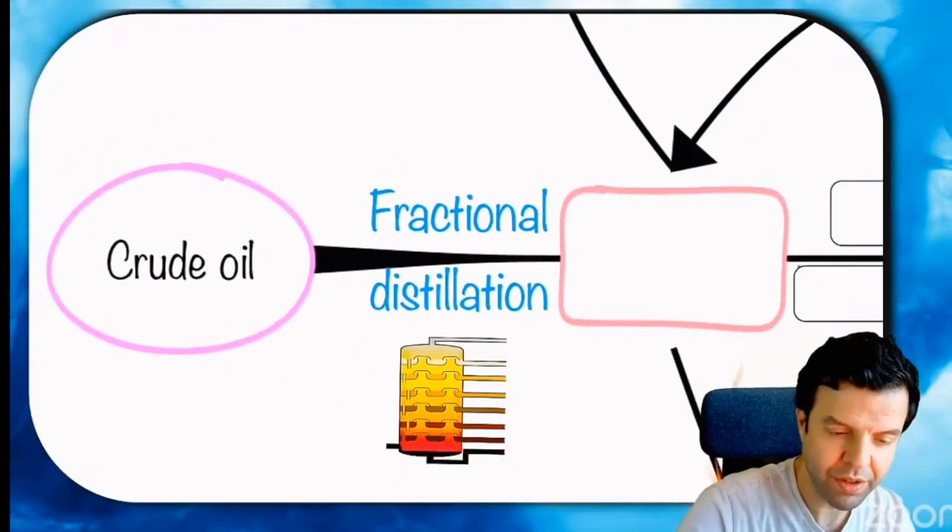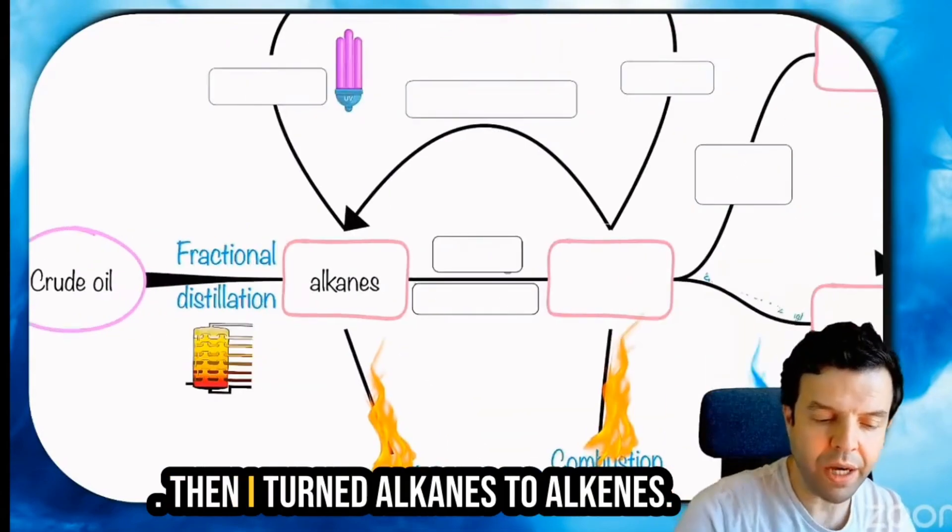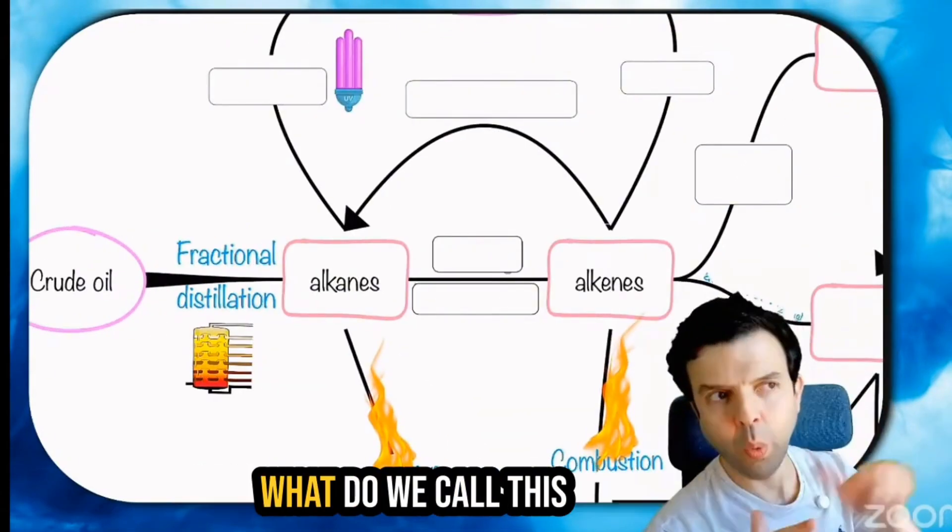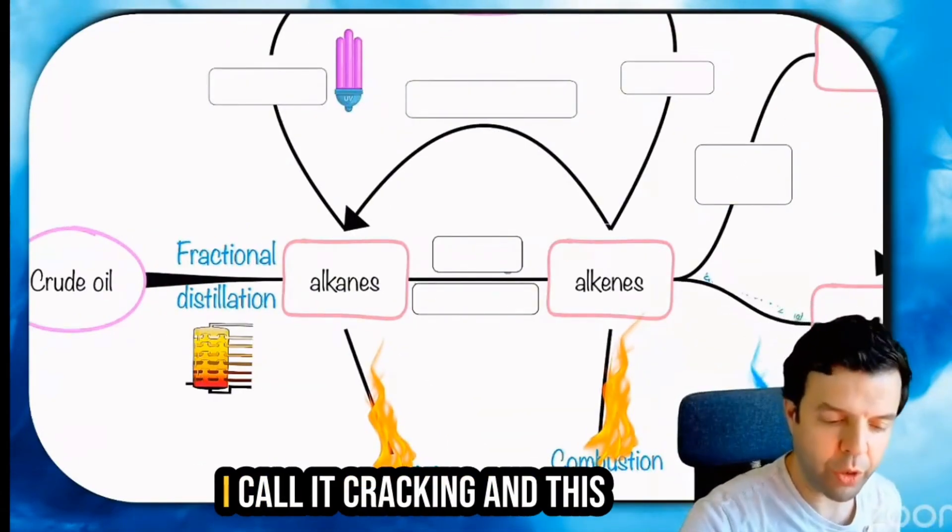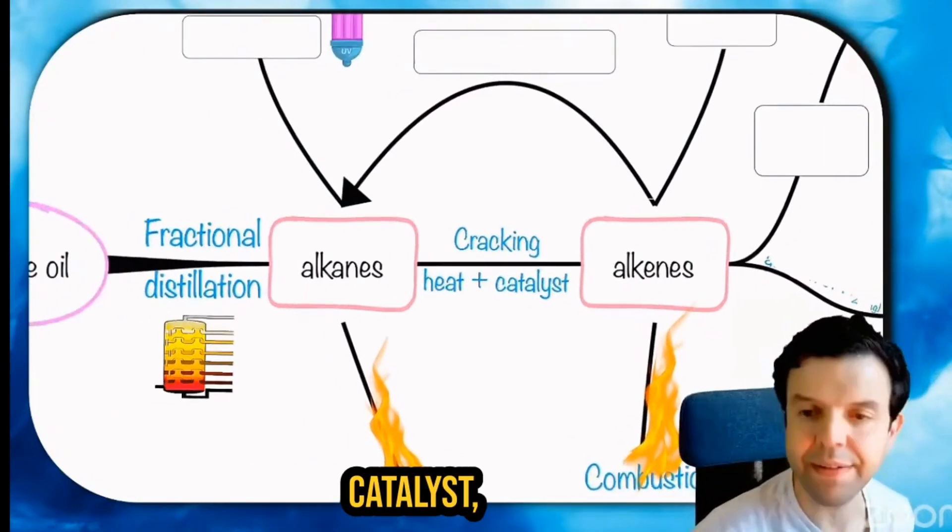We did fractional distillation and we ended up with alkanes. Then I turned alkanes to alkenes. What do we call this reaction to start with? I call it cracking. And this reaction was with a catalyst.